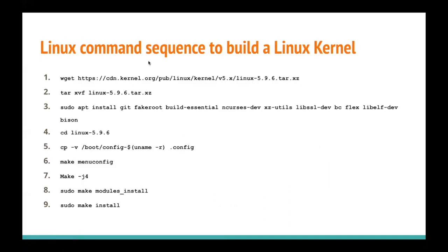This is the sequence of commands to build a Linux kernel — here we are taking the example of version 5.9.6. These are the packages required to build a kernel; for example, ncurses is used to set configuration options. This command copies the configuration file of the already-installed kernel into the new source code. So let's try to build kernel 5.9.6.